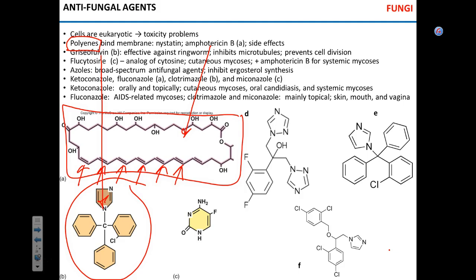Microtubules are necessary for formation of the mitotic spindle and therefore cell division, so griseofulvin essentially inhibits cell division and eventually the fungus dies — no new cells are formed. Flucytosine is an analog of cytosine, so it can inhibit DNA synthesis in the fungus. It's fairly toxic and can be used to treat cutaneous mycosis — mycosis being the general name for any fungal disease — and in combination with amphotericin B can be used to treat systemic ones.